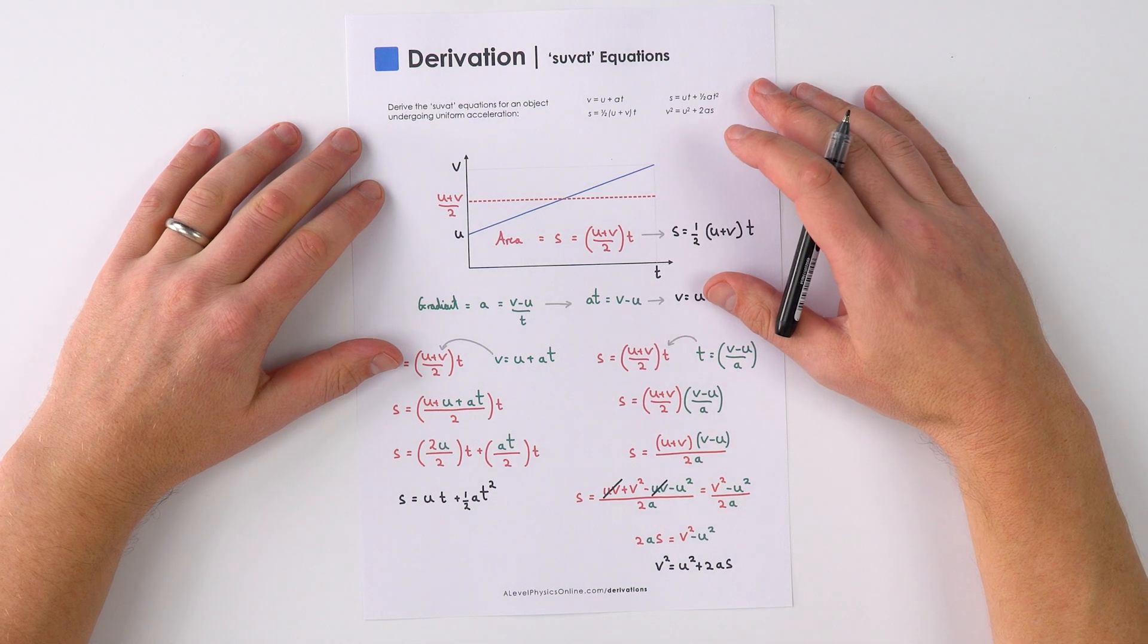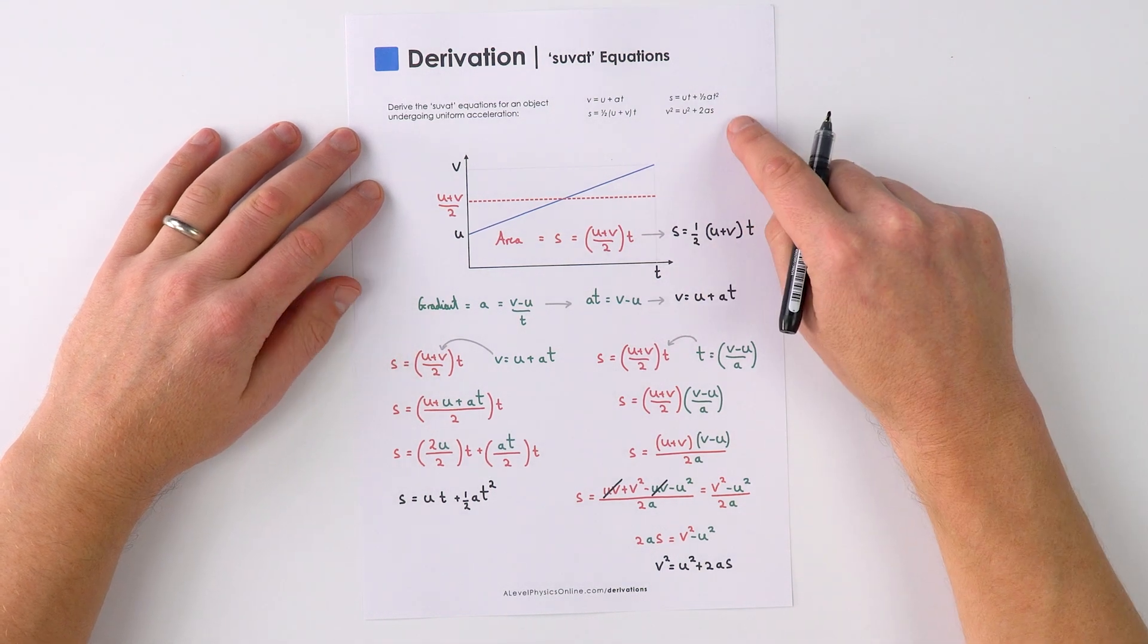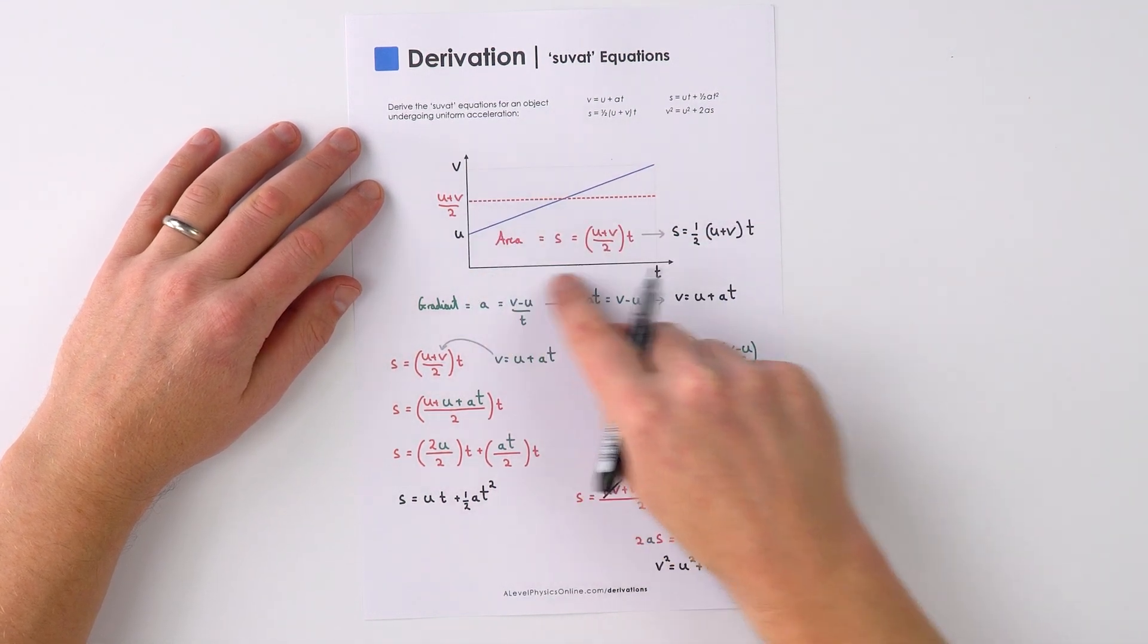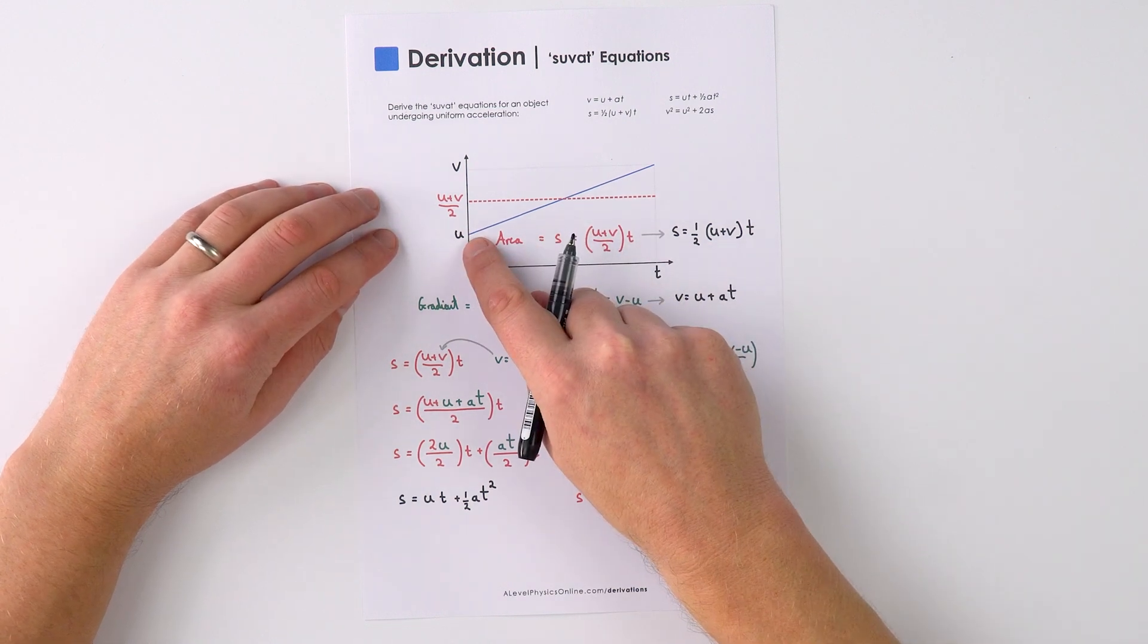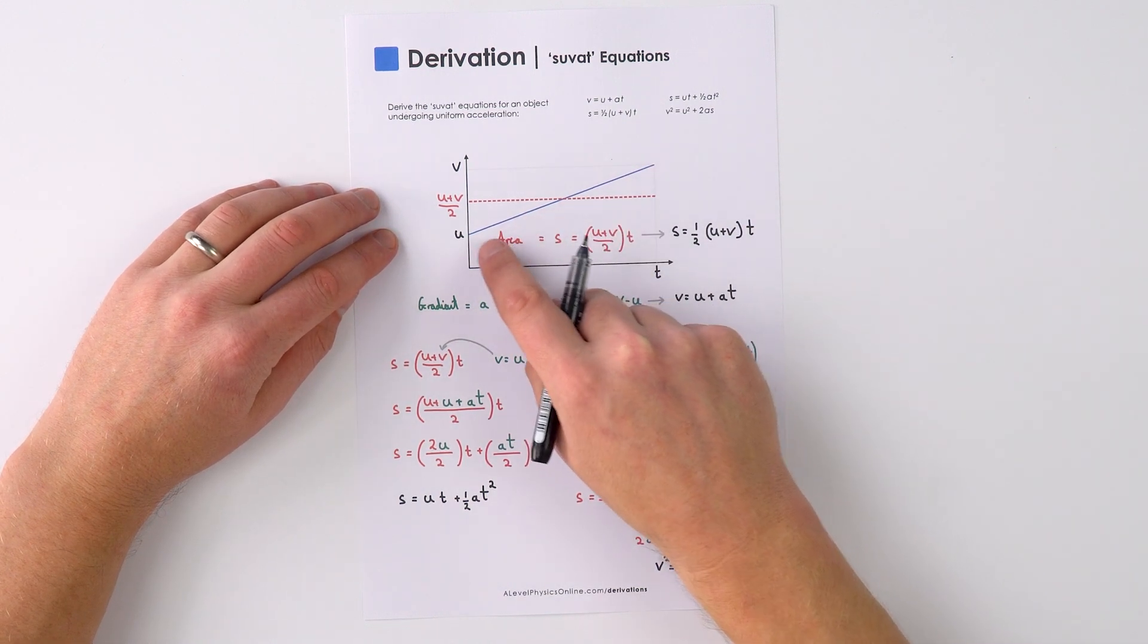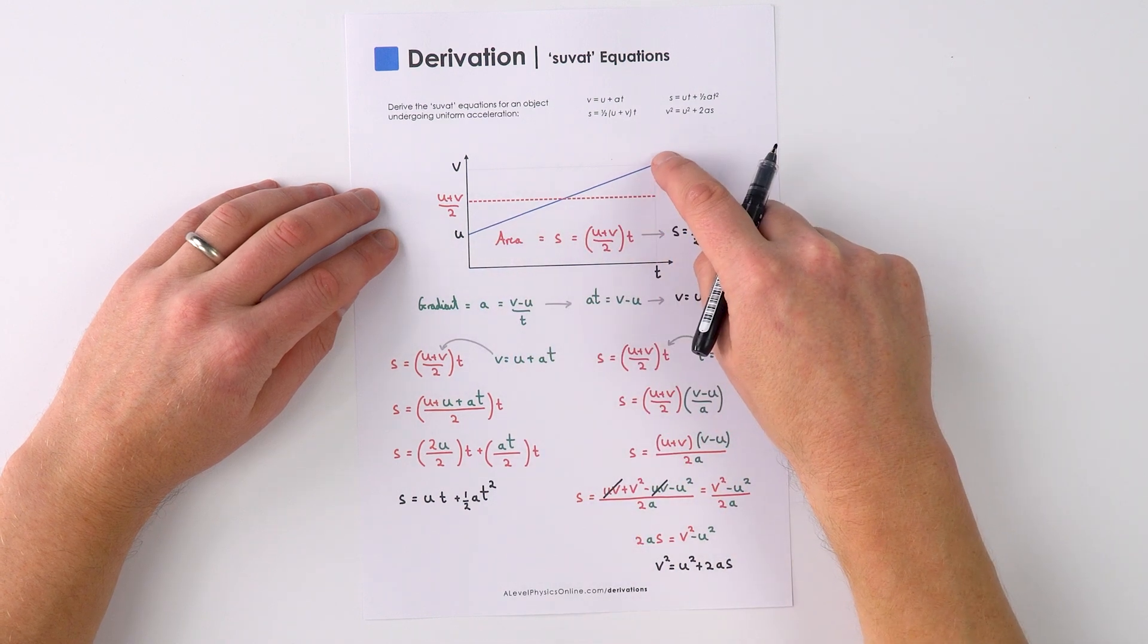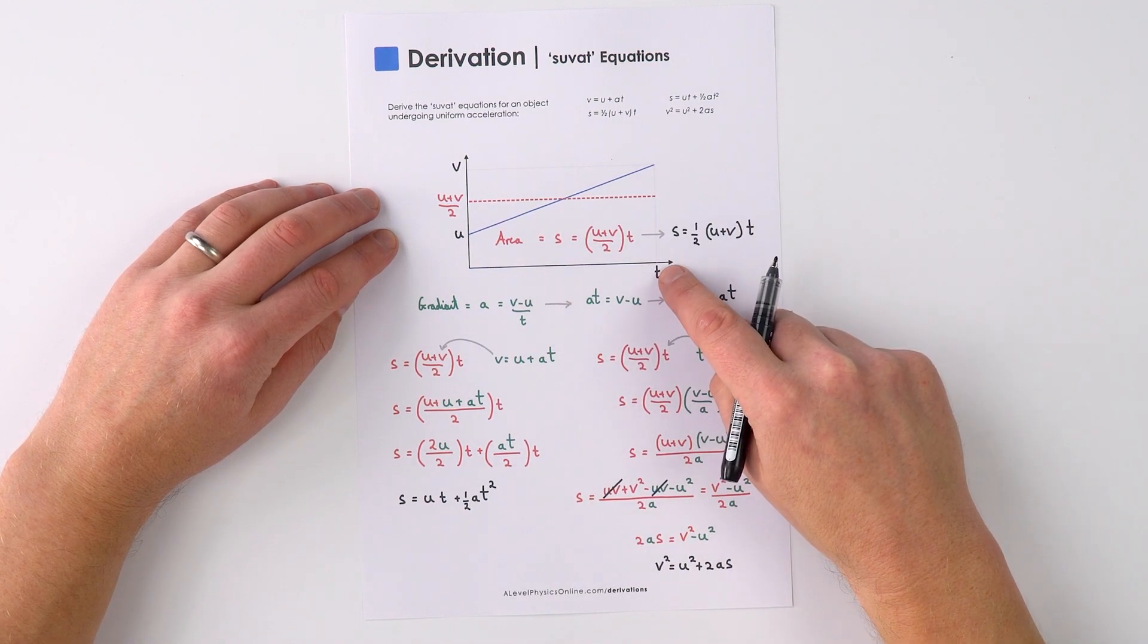So this is how to quickly derive the four Suvatt equations of motion. The first thing we have is this graph here that shows something where there's a uniform acceleration as an object initially at u ends up at v meters per second after a time t.